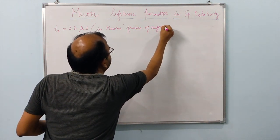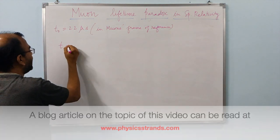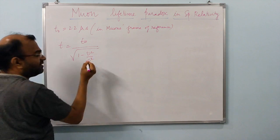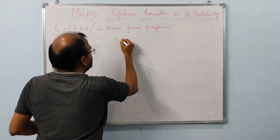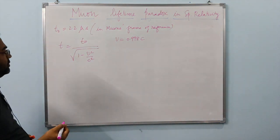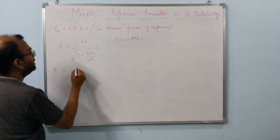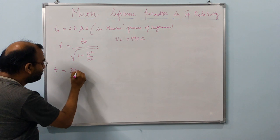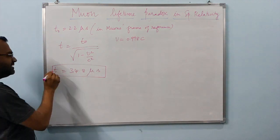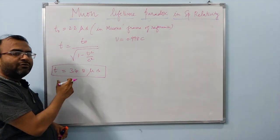In Earth's frame of reference, this lifetime dilates. Applying the time dilation formula with typical muon velocity at 0.998c, the dilated lifetime t comes out to be about 34.8 microseconds. So in Earth's frame of reference, the lifetime available for the muon to travel is dilated to approximately 34.8 microseconds.